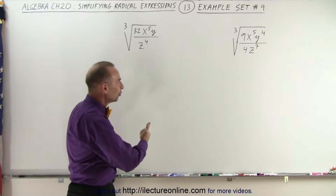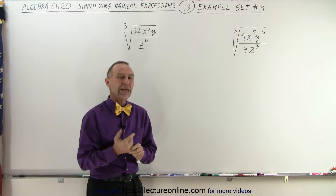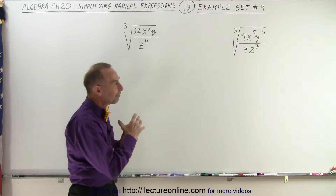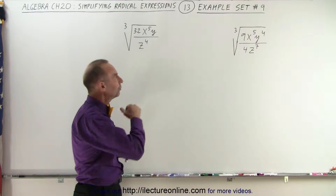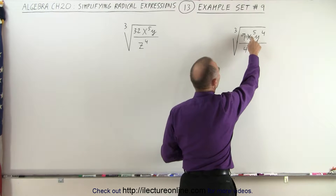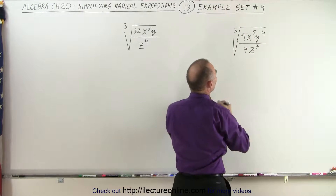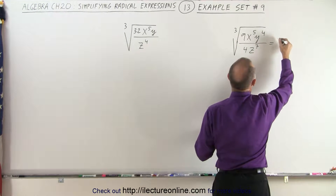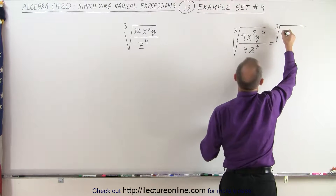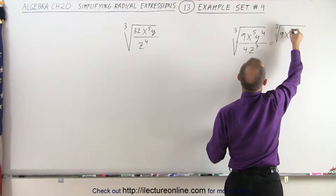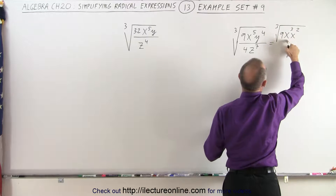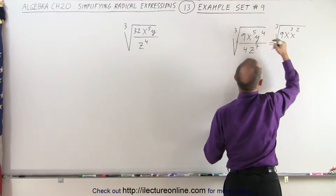Whenever we see a cube root or a fourth root or a fifth root and want to simplify these radicals, we want to find multiples of the root. So in this case, notice we have x to the fifth, which can be broken up into the following — this can be written as the cube root of 9x to the third times x squared. Notice that when I multiply, I get x to the fifth back.